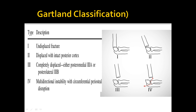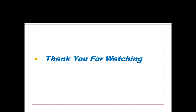Type 3 is a completely displaced fracture, either with posterior medial or posterior lateral displacement. Type 4 involves a rotational element with complete displacement and periosteal disruption; type 4 fractures normally require surgical management. This is how the Gartland classification helps in the management of the patient. Thank you for watching.